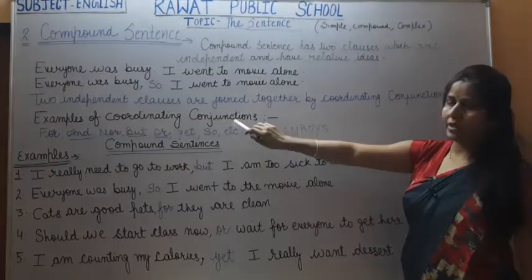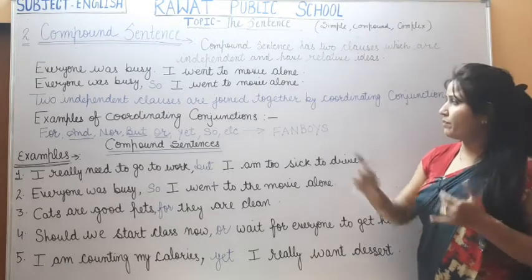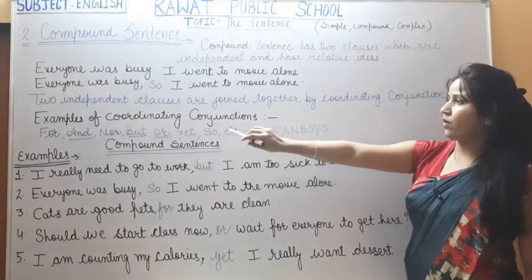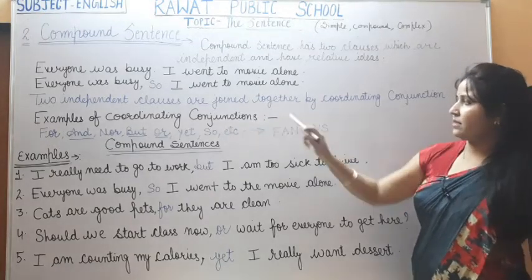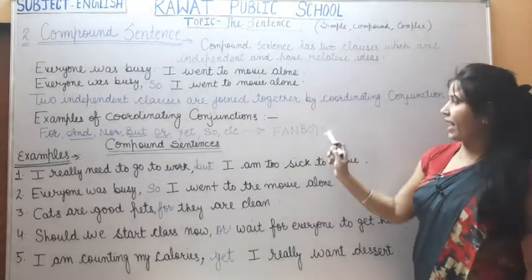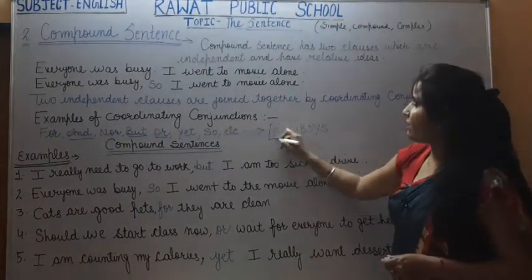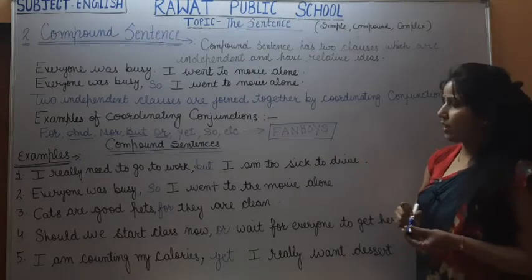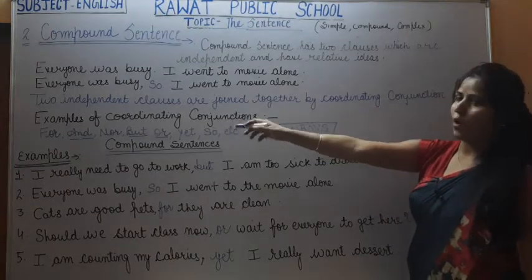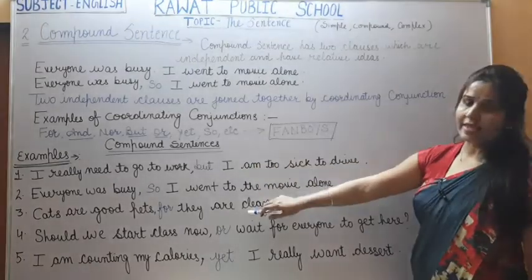As I explained in a previous video, with the help of the FANBOYS trick we can learn all coordinating conjunctions: F for 'for', A for 'and', N for 'nor', B for 'but', O for 'or', Y for 'yet', S for 'so'. Mostly we use 'and', 'but', and 'or'.